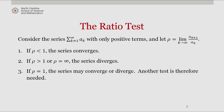If rho is greater than 1, or rho is infinite, the series diverges. And if rho is equal to 1, the series may converge or diverge, but another test is therefore needed.